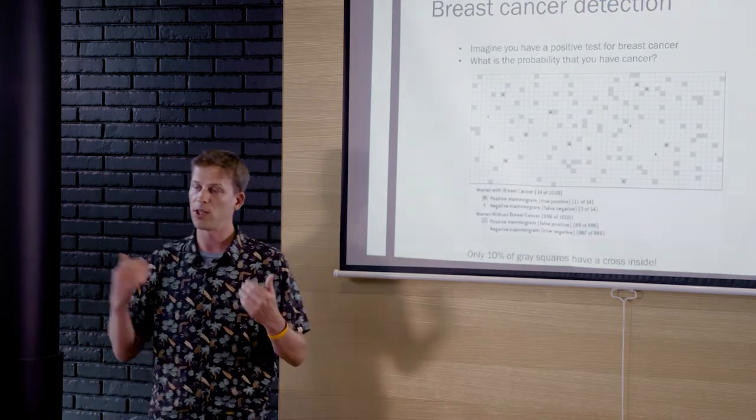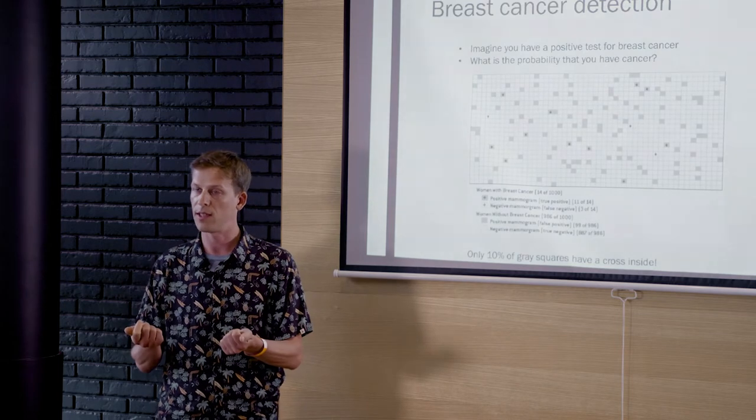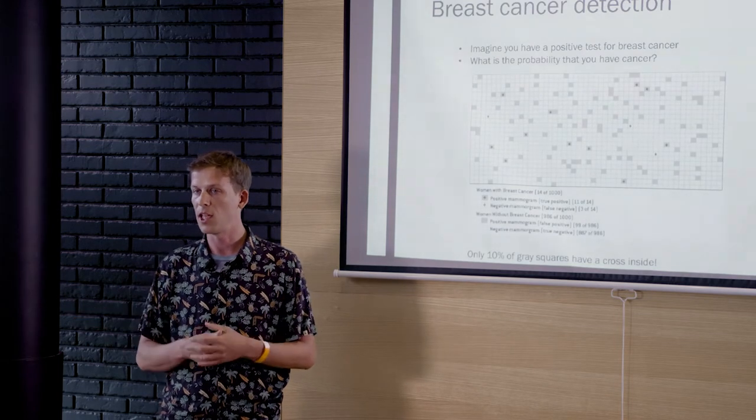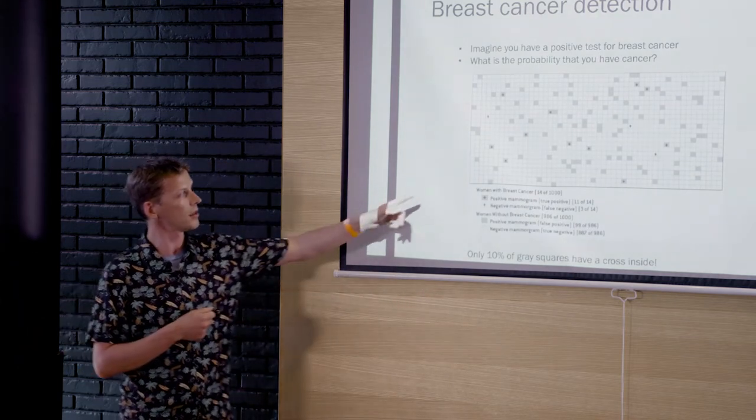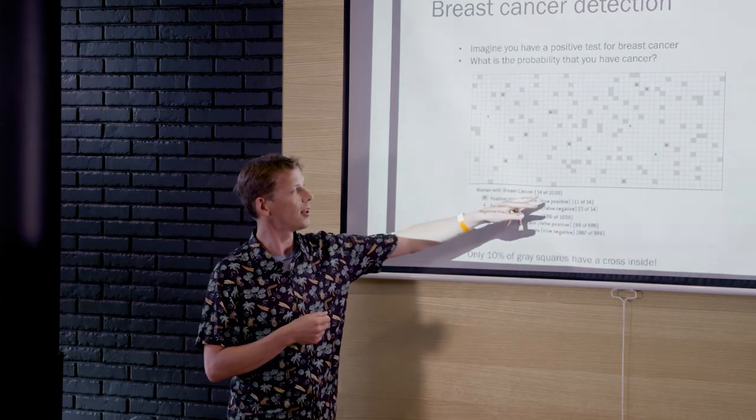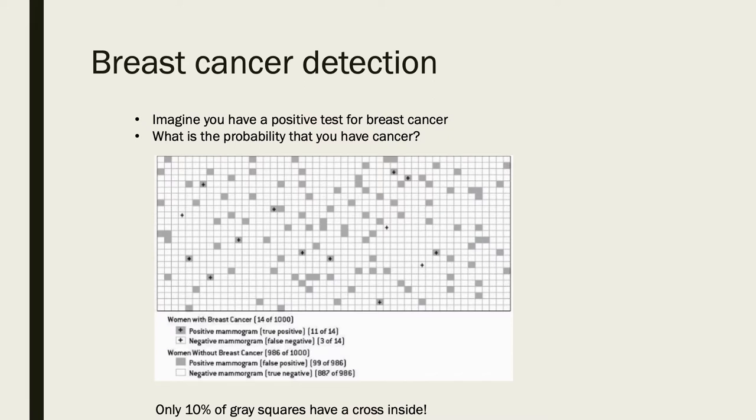But now let's go into the situation where you actually have a positive test. So what does it mean? It means you are one of the gray squares. And if you're one of the gray squares, you have actually a lot of chances not to get a black cross, right? So only about 10% of the gray squares have cancer. So the answer to the question is that the probability that you get cancer is only 10%.